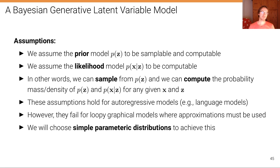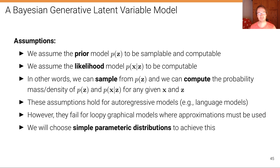These assumptions hold for autoregressive models such as language models, but fail for many other models such as loopy graphical models where approximations like belief propagation must be used. In the context of variational autoencoders, we will consider very simple parametric distributions like Gaussians parameterized through neural networks to achieve this property of easy sampling.